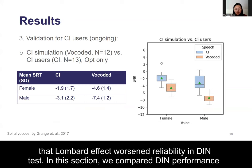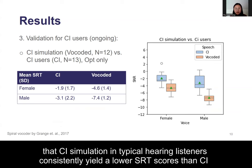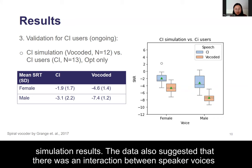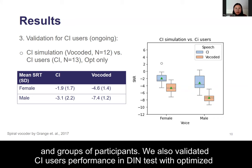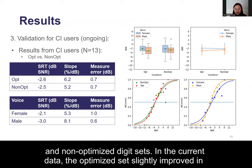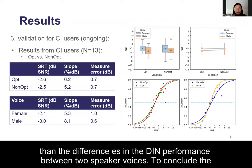In this section, we compared DIN performance of typical hearing listeners with CI simulations to that of CI users. We found that CI simulation in typical hearing listeners consistently yielded lower SRT scores than CI users across speaker voices, with an average difference of 2 to 4 dB. CI users' results varied more than CI simulation results. The data also suggested an interaction between speaker voices and groups of participants. We also validated CI users' performance in DIN tests with optimized and non-optimized digit sets. The optimized sets slightly improved DIN score by 0.1 dB and the slope by 1% per dB on average — magnitudes even smaller than the differences in DIN performance between the two speaker voices.